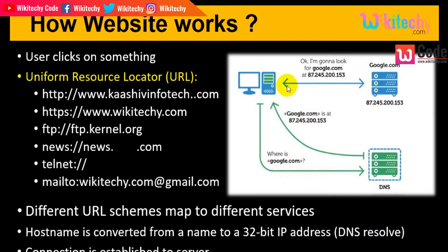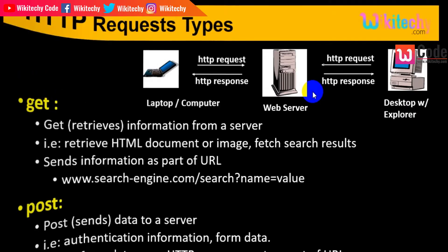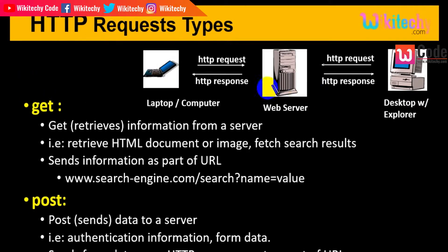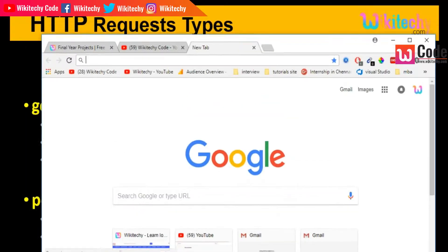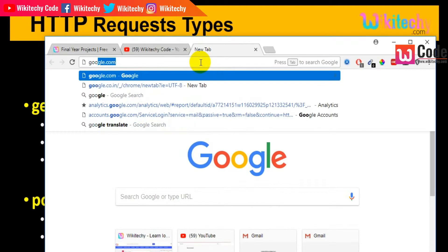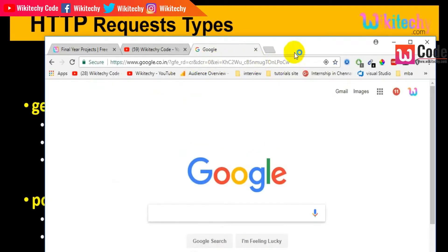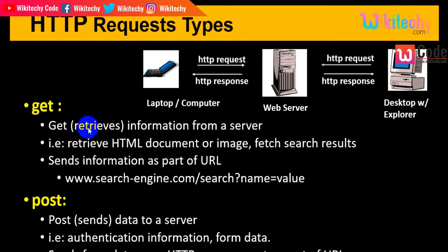There are two kinds of requests: GET and POST. GET retrieves information from the server — it takes data from the server. For example, accessing google.com sends a GET request. GET retrieves the HTML document, images, or search results, and sends information as part of the URL.